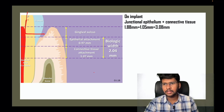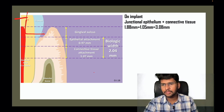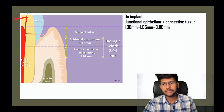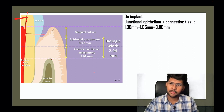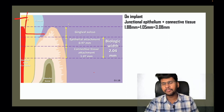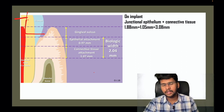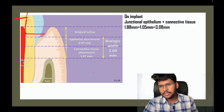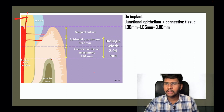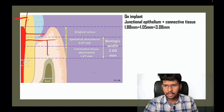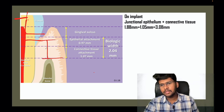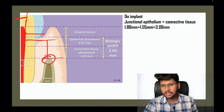In a normal class 2 restoration, the proximal box is placed above the epithelial attachment. If there is enough biologic width, there is no issue — restorations will be fine as long as they have good contact and contour. But when restorations extend deeper onto the tooth surface, the required biologic width is violated.